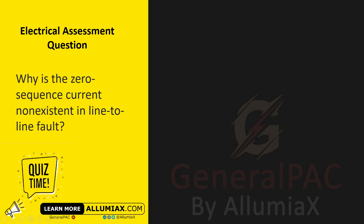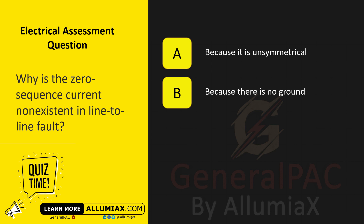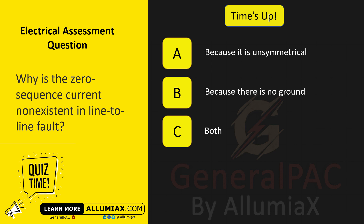Why is the zero-sequence current non-existent in line-to-line fault? A. Because it is unsymmetrical. B. Because there is no ground. C. Both. The answer is B — because there is no ground.